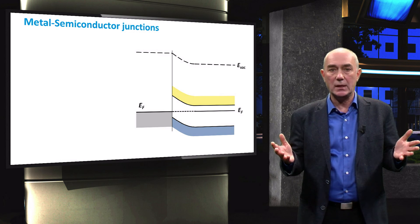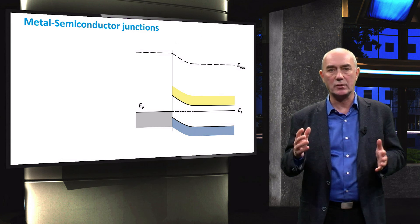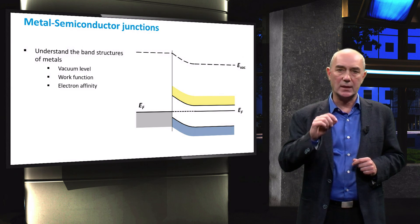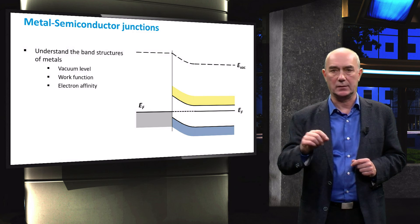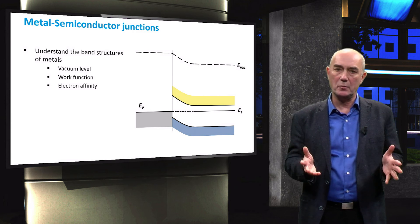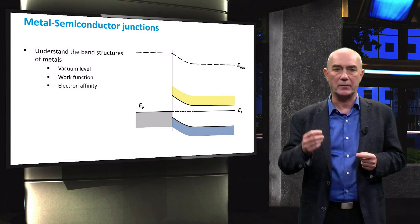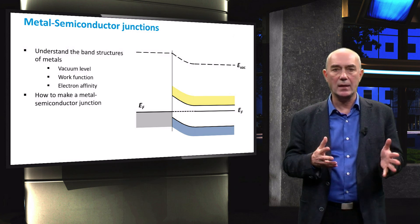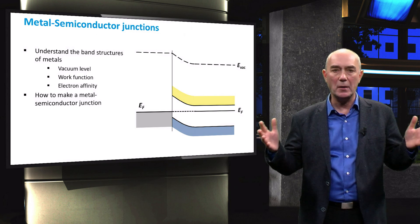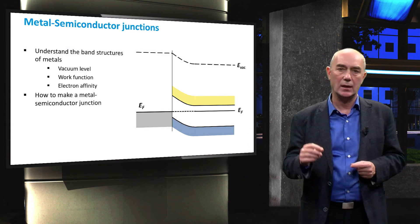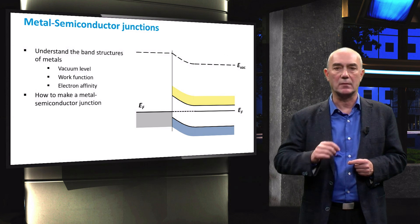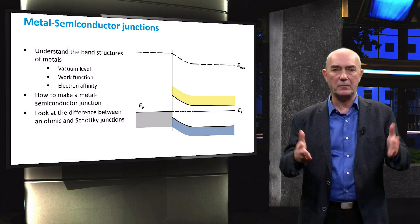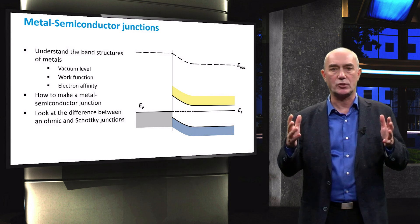During last week, we will understand what happens at the junction of a metal and a semiconductor. We will start with an explanation of the energy band structure of metals. By doing so, we will introduce the concepts of the vacuum level, work function and electron affinity. Then, we will explain to you how to make a metal semiconductor junction and what are its implications on device performance. Lastly, we will focus on the difference between ohmic and Schottky contacts.